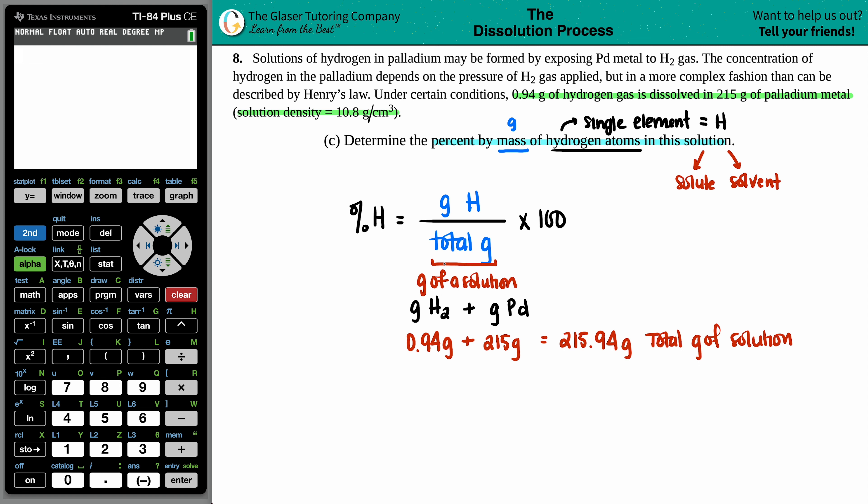Now, keep in mind that the 0.94 grams is the H2. We want just the grams of all the atoms of hydrogen, not of the molecule. So before I try to solve this problem, I first have to take my 0.94 grams of H2 and see how many grams of just hydrogen I have. That's the atoms. This is not an atom. That's a molecule.